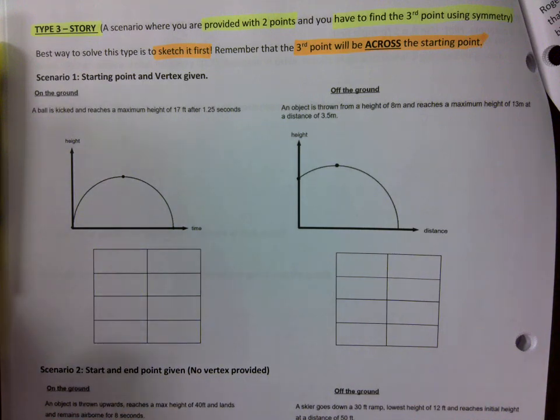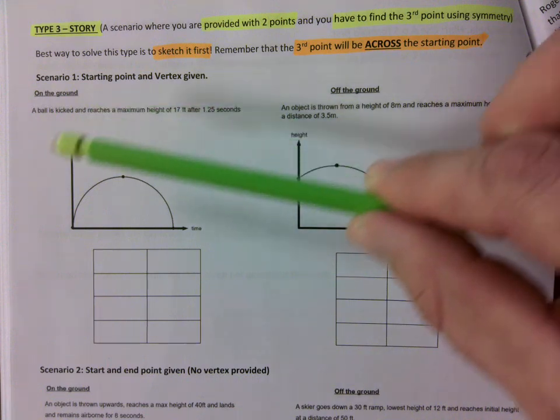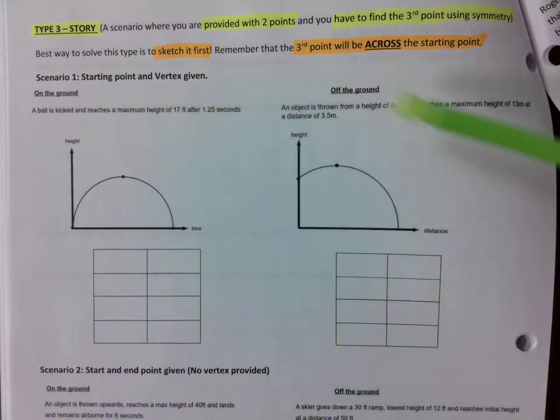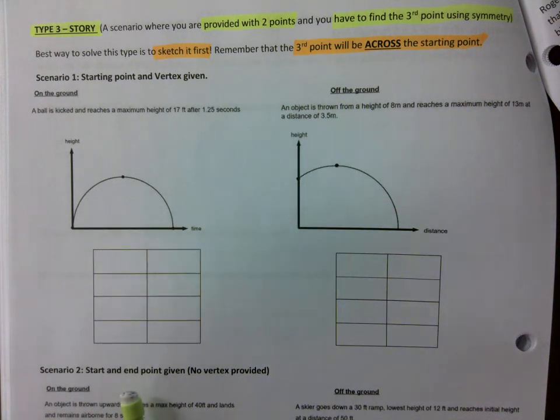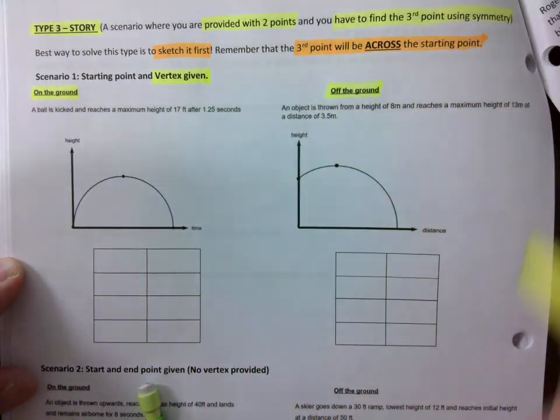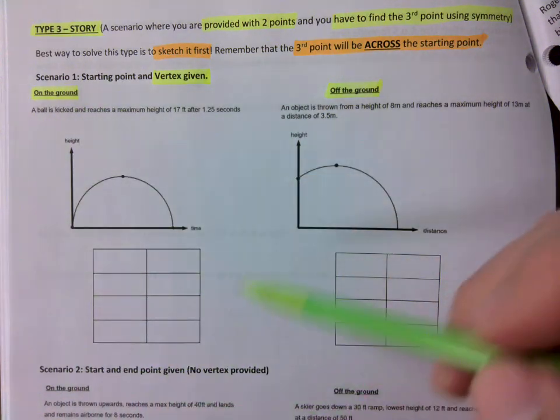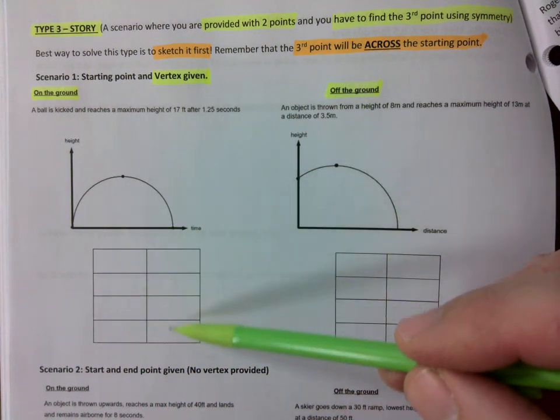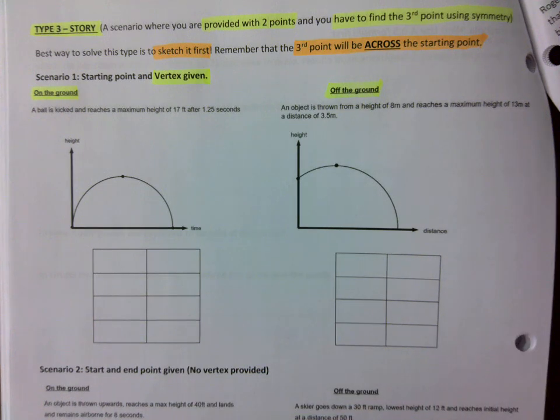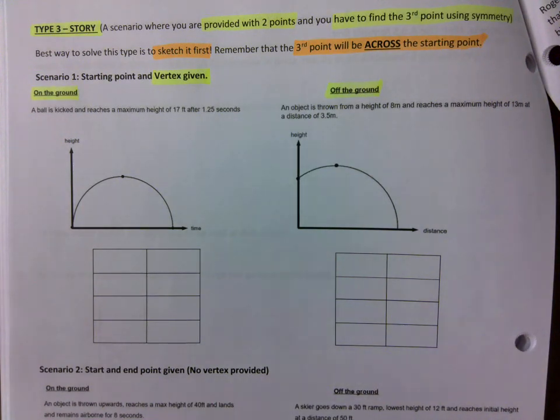If you know something on one side you can figure it out on the other side. The best way to solve this type is to sketch it first. Just a sketch, no scale, nothing like that. Remember that the third point is always across the starting point. This is very important. The ultimate goal is to fill in this table with at least how many points you need for a regression - three, right? That's always the goal, a quadratic regression.